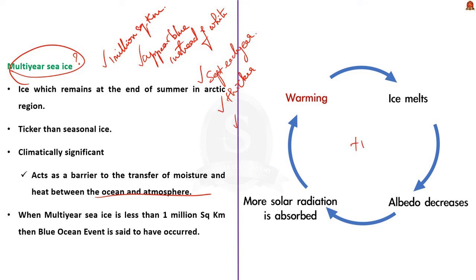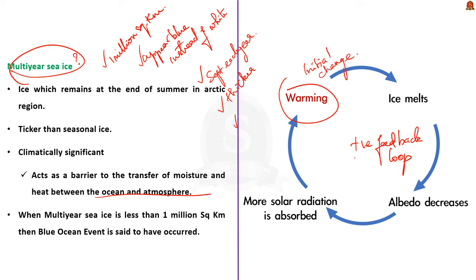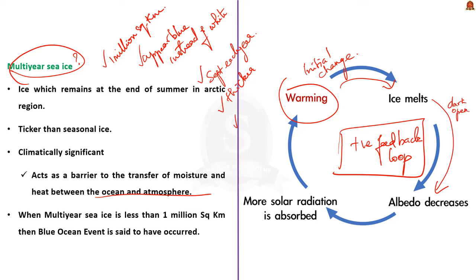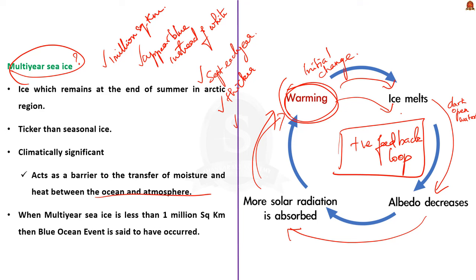Multi-year sea ice helps in preventing the positive feedback loop — a self-reinforcing cycle where an initial change leads to additional change that further amplifies the original change. When global temperature rises, Arctic sea ice melts at an accelerated rate. This reduction in ice coverage exposes large areas of dark open water, which has lower albedo or reflectivity compared to ice. The darker water absorbs more light instead of reflecting it back into space, leading to increased heating of the Arctic region and further melting.